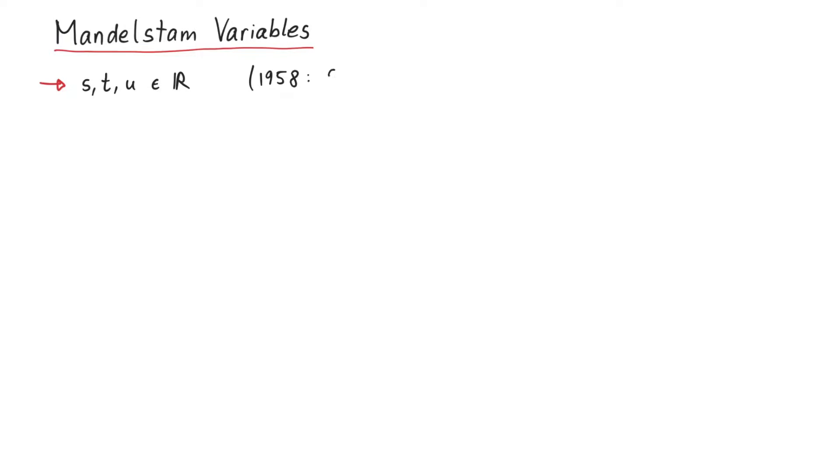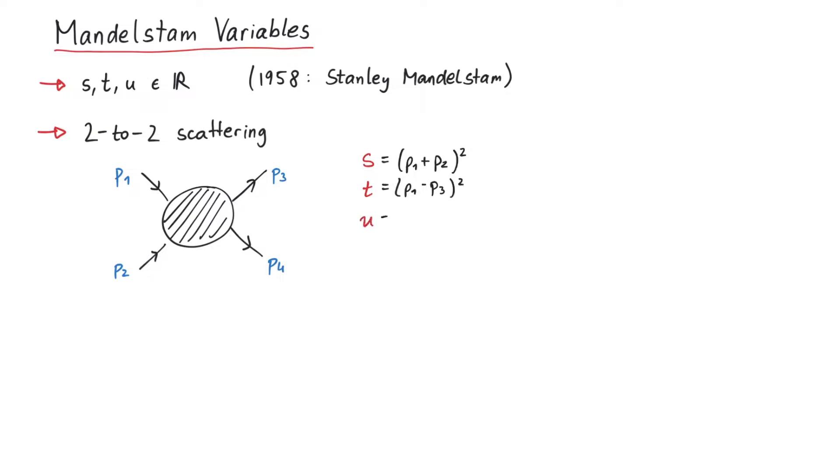They have been introduced in 1958 by US physicist Stanley Mandelstam. The Mandelstam variables are most commonly used to describe a scattering process where two particles come in and two particles go out again. If we denote the momentum of these particles with pi, the three Mandelstam variables s, t and u are given by these relations. Since four momentum is conserved, we can also write them down like this.